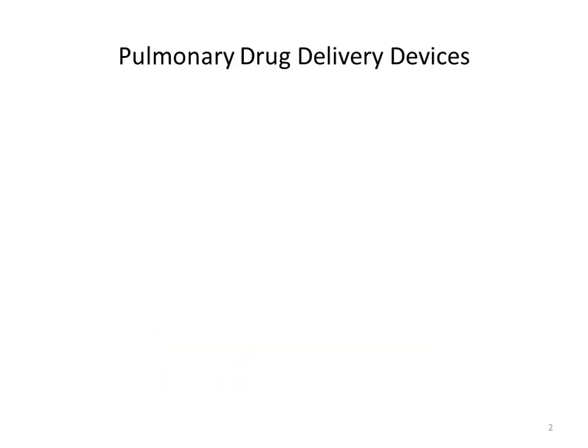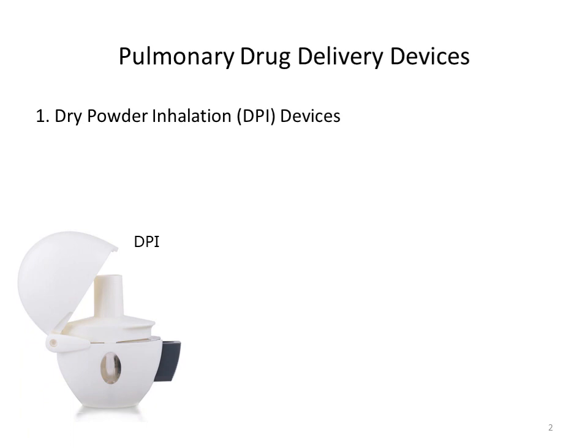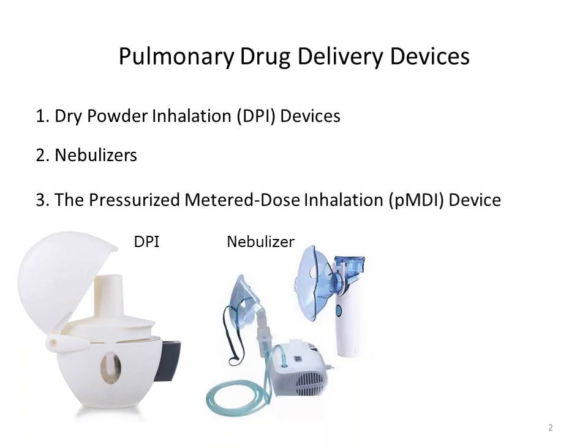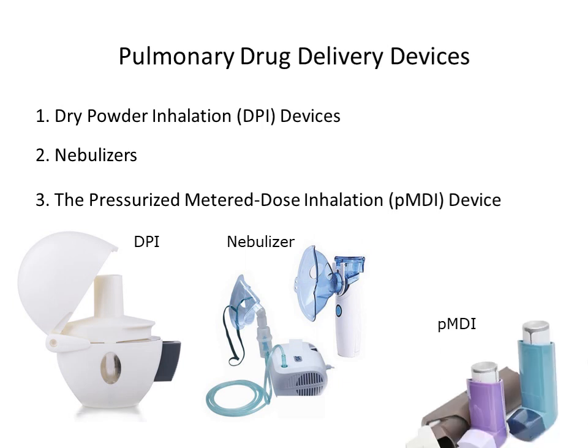We can deliver a drug formulation via the pulmonary route by three types of devices. Number one is dry powder inhalation devices, that is DPI. Number two is nebulizers. And number three is the pressurized metered dose inhalation devices, that is PMDI, or simply metered dose inhaler, MDI.